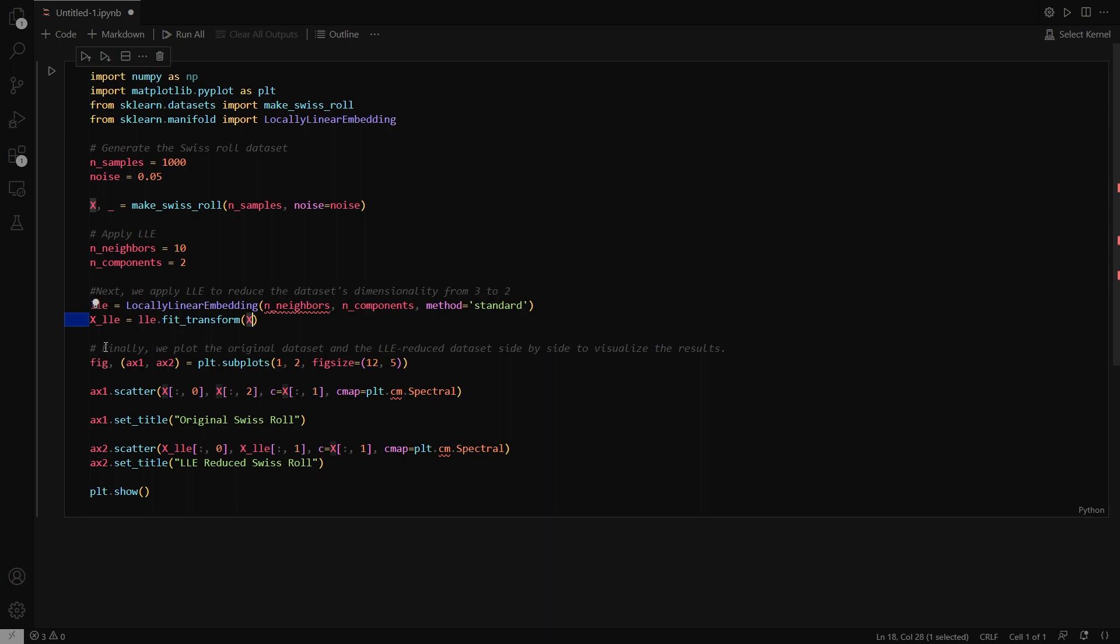That will create your reduced dimensionality dataset X_LLE. That's as easy as it is to apply LLE. In the rest of the code, I'm just plotting the original dataset and the LLE reduced dataset side by side to visualize the result.